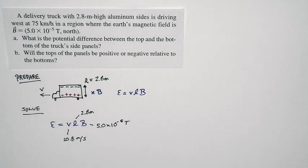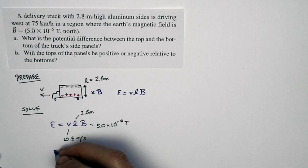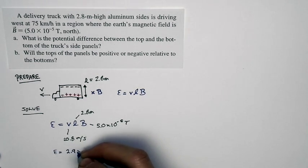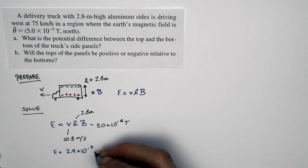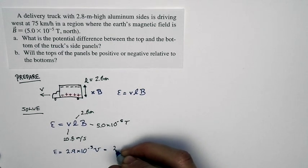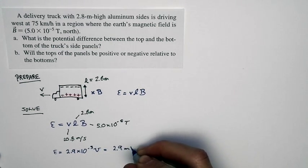Net result, if we calculate this out, is we get motional EMF to two significant figures. That's 2.9 times 10 to the minus 3 volts, or 2.9 millivolts.